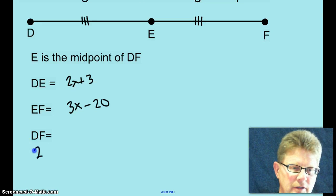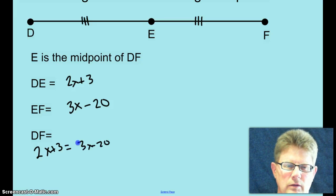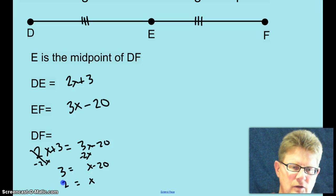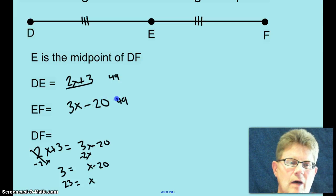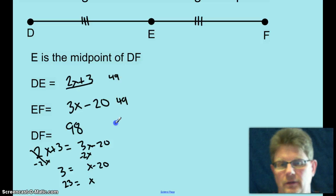Since E is the midpoint, you should be able to write an equation something like this: 2X plus 3 equals 3X minus 20. Subtract 2X from both sides. 3 equals X minus 20. Add 20 to both sides. X equals 23. So how big is DE? 49. How big is EF? 3 times 23 is 69 minus 20, 49. How big is DF? 98. Now I know you'll see some homework like that. That's going to stump you a little bit more.